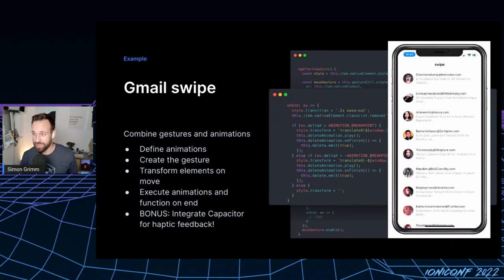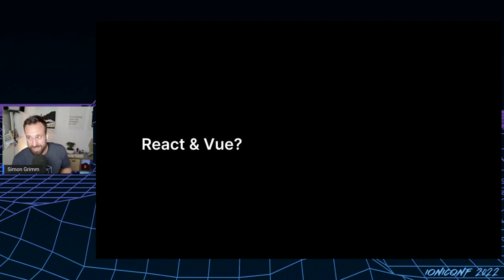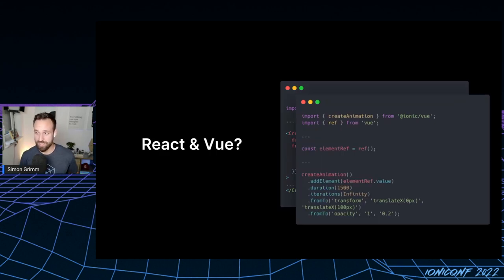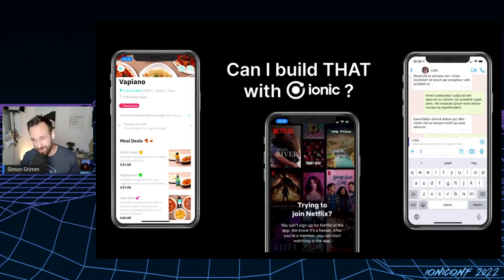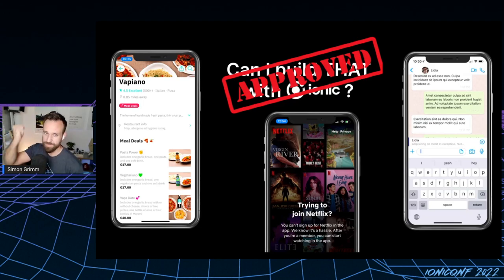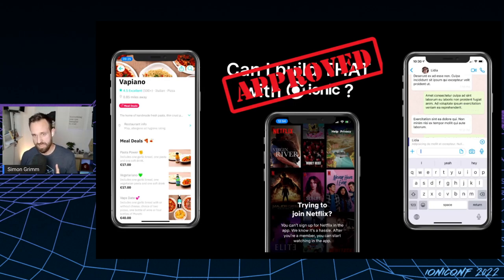In the examples you saw Angular code — I'm still a React noob, I started with React last week. But you can definitely use all of this with React as well: use createAnimation from ionic/react, or the same from the ionic/vue package. No excuses — you can do this with React, Vue, and everything you can think of. So, can I build that with Ionic? Yes, definitely approved. I also built a Netflix application and a food ordering application, so this covers a wide range.